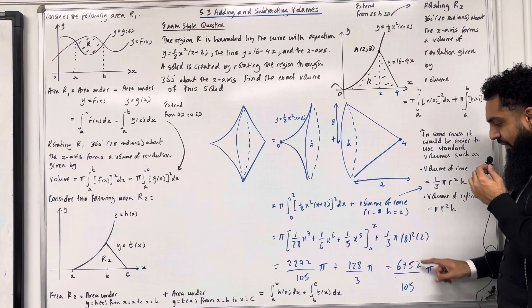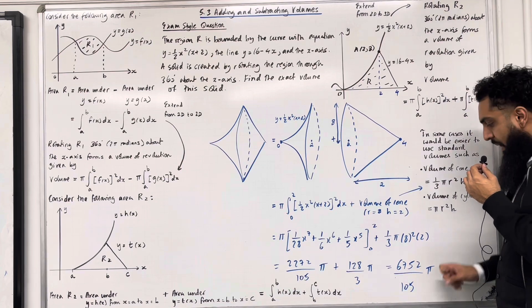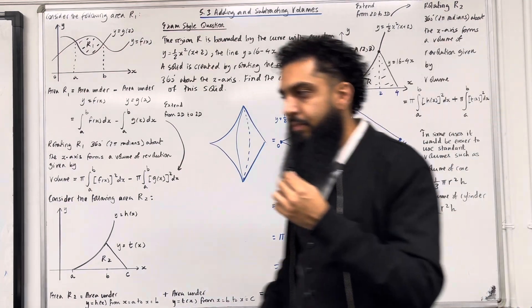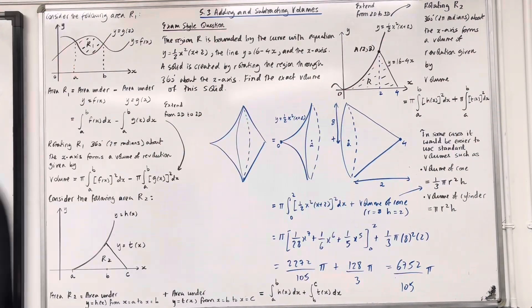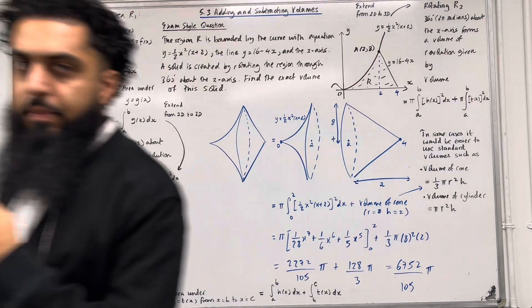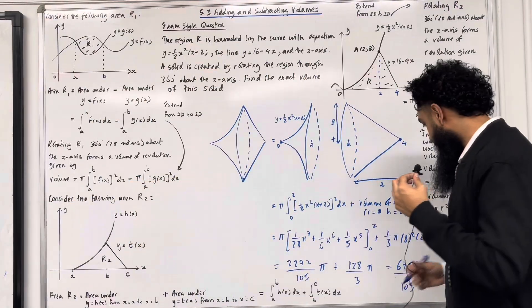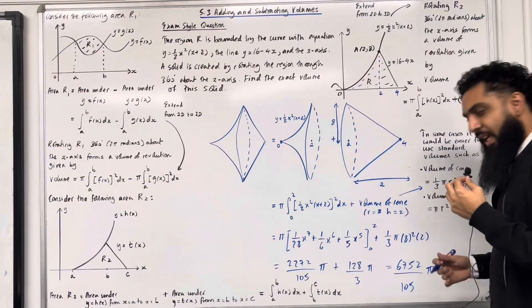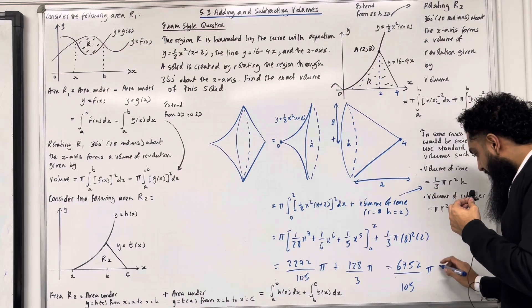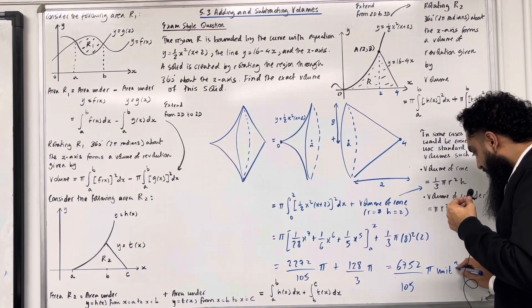Adding the two values gives the same answer as my previous method: 6752/105 π. To be precise with notation, I should put unit cubed.